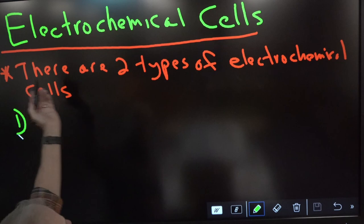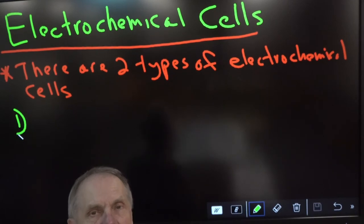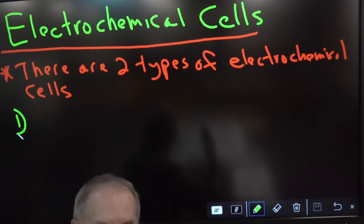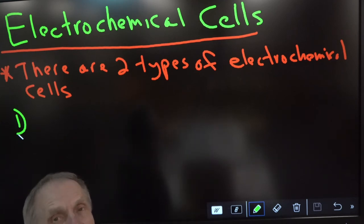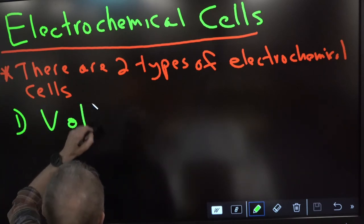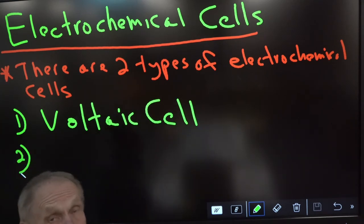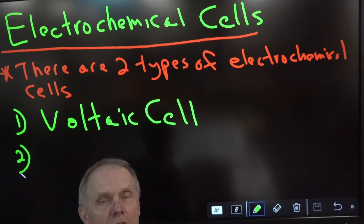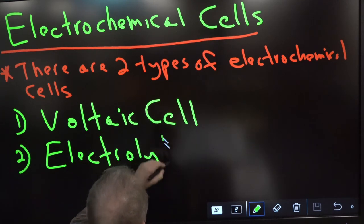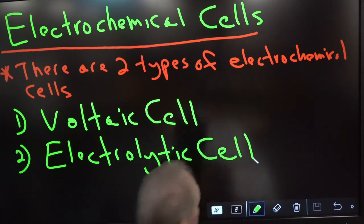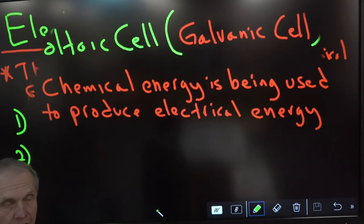This is called electrochemical cells and as you can see there are two types. We are going to be talking about only one of these during this video. The first one is called the voltaic cell. The second one we'll talk about later in the next video is called an electrolytic cell. So these are the two electrochemical cells: a voltaic cell and an electrolytic cell.